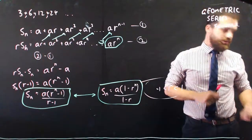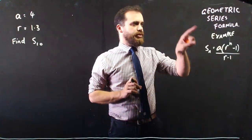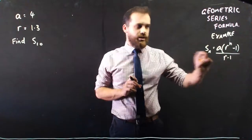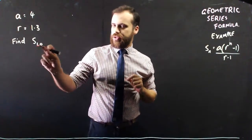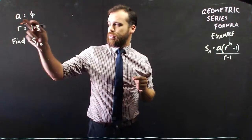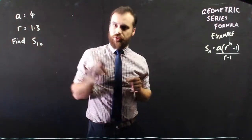Okay, that's the geometric series formula. Very quick video. Geometric series formula. There it is. I'm going to find the sum of the first 10 terms of a geometric sequence with a first term of 4 and a common ratio of 1.3.